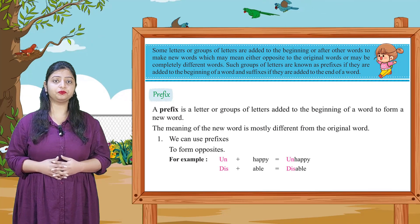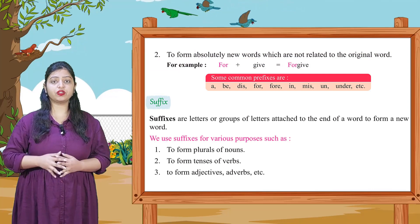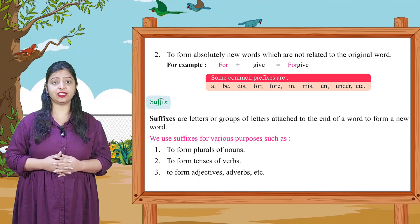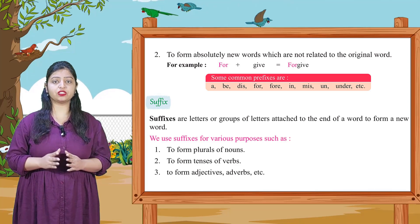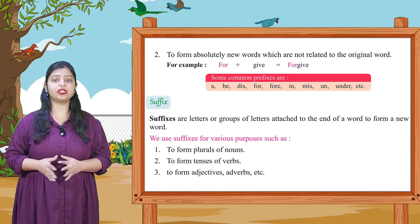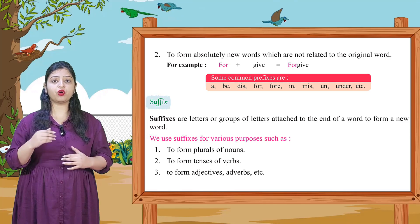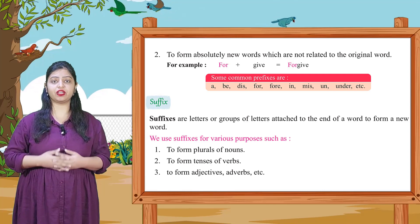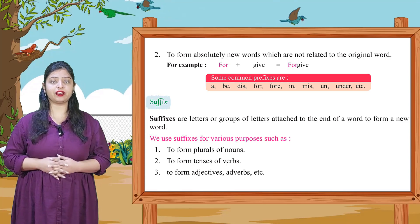Second point: prefixes can also form absolutely new words which are not related to the original word. Kabhi kabhi hum prefix tab use karte hain jab hum bilkul meaning change kar dete hain aur us word ka original word se koi milta julta sense nahi hota. Example: for + give = forgive. 'Give' toh dena hota hai, par 'forgive' aur 'dene' ka koi relation nahi hai. Forgive ek alag word ban gaya — yaani ki maafi — ek naya word ban gaya.